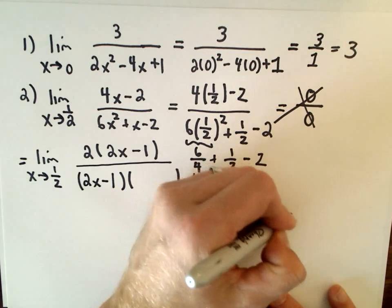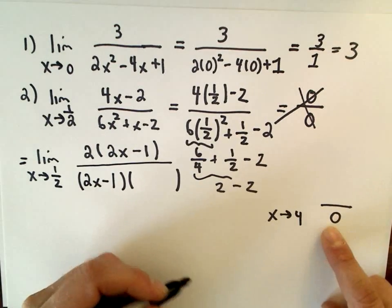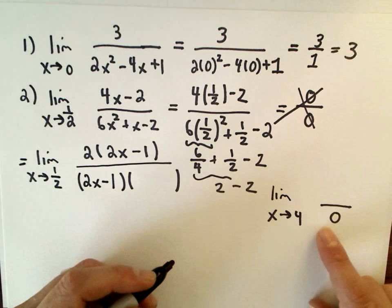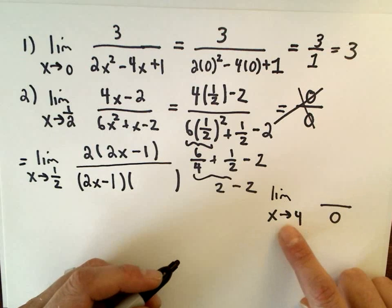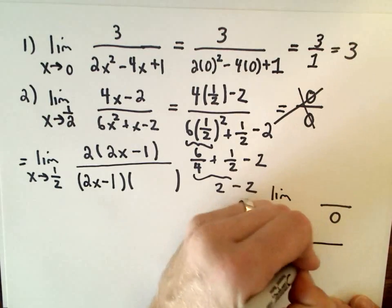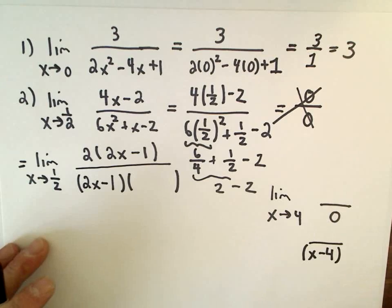So again, maybe think about that if I went a little quick there. It would be the same thing like if I was substituting in x equals 4, and suppose I ended up getting a 0 in the denominator. This has nothing to do with the limit as x approaches 4. I'm just picking a random example. If I substituted x equals 4 in the denominator and it was 0, I would know that there would be a factor of x minus 4 down there somewhere.